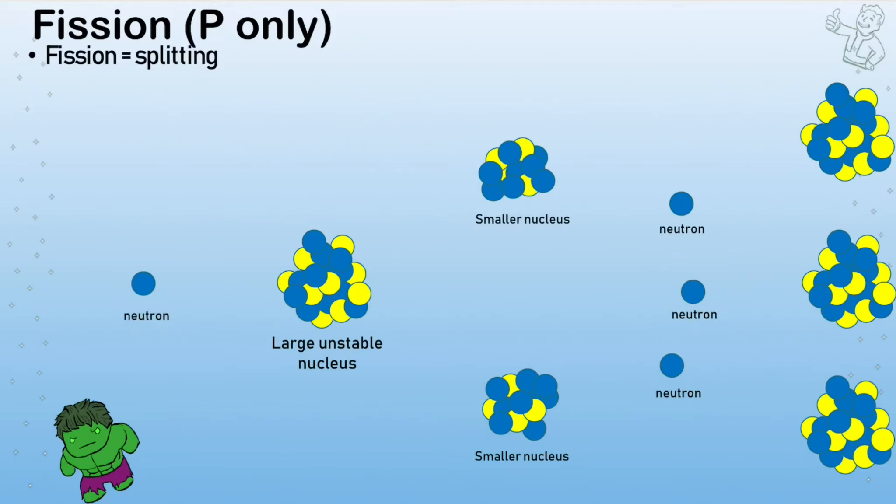So nuclear fission to begin with is where we are splitting things. Fission means splitting and fusion means combining. So we're looking at two nuclear processes here. One is splitting of large nuclei into smaller ones and fusion is combining of small ones into larger ones.